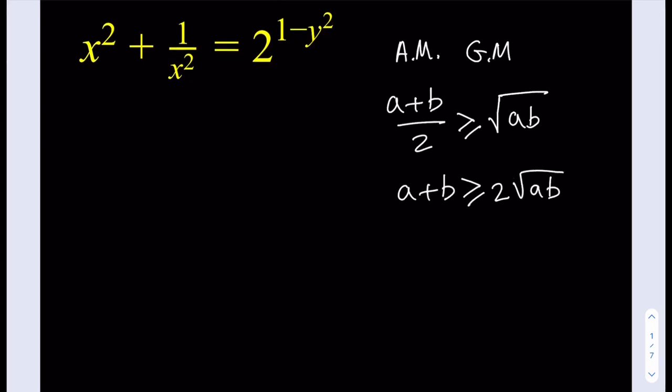a plus b is greater than or equal to 2 times the square root of ab. Now, we can easily prove that because if you go ahead and subtract 2 root ab from both sides, you're going to notice that this is actually the square of root a minus root b, which is obviously always non-negative.